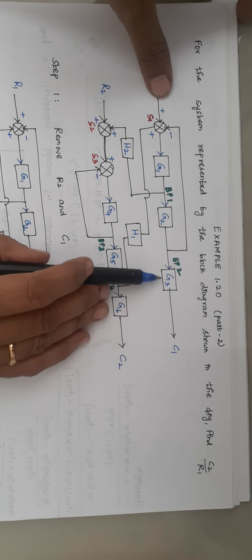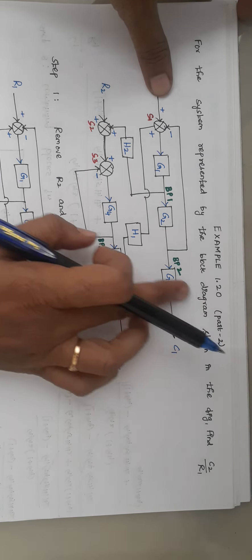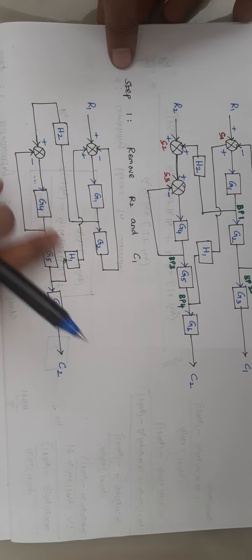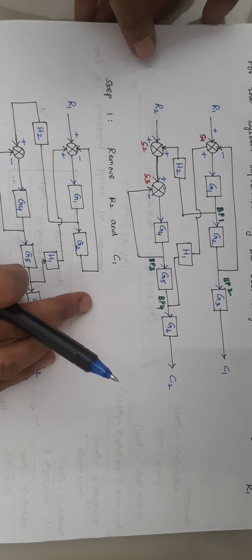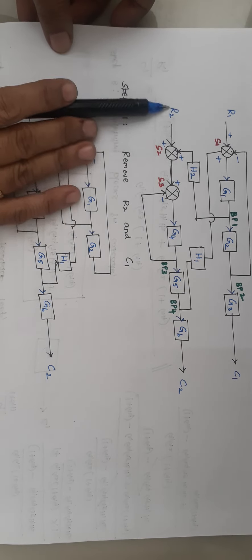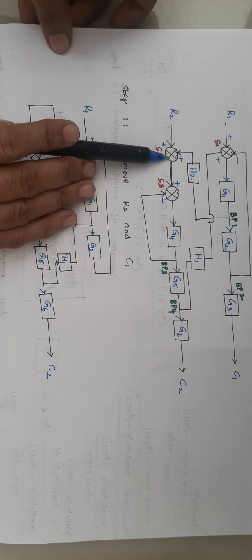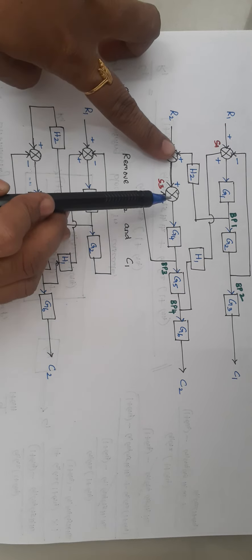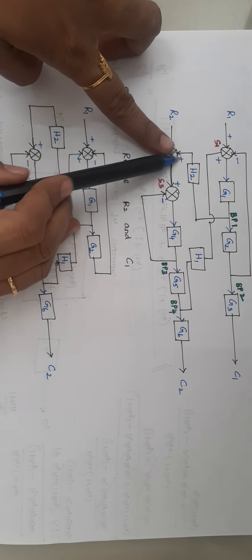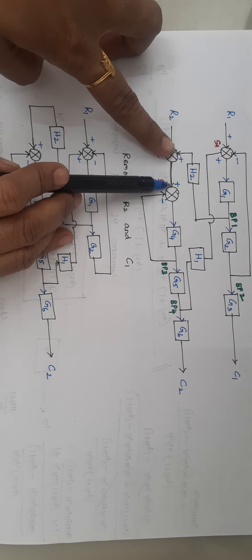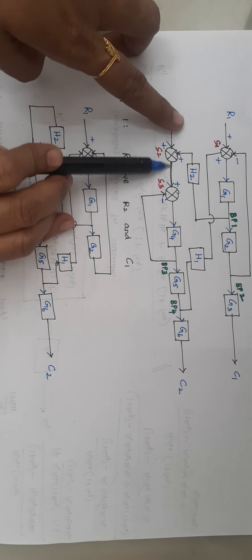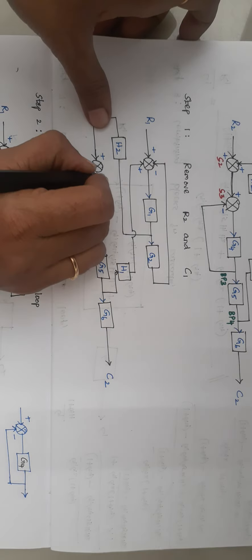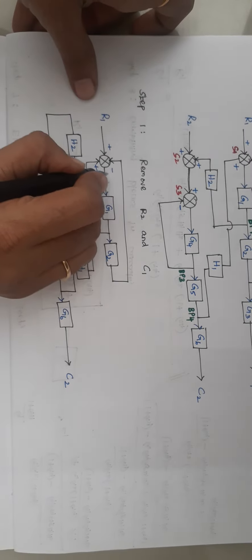When you remove C1, the block G3 which is connected with C1 will be removed. This is the reduced block diagram — G3 is removed. Next, R2 is connected with the summer, so I have to remove this summer. When you remove this summer, the block H2 which is connected with this summer will get connected to summer S3. Here the type of feedback is positive, so just connect H2 to this summer directly. So this is your summer S3 and this is your summer S1.